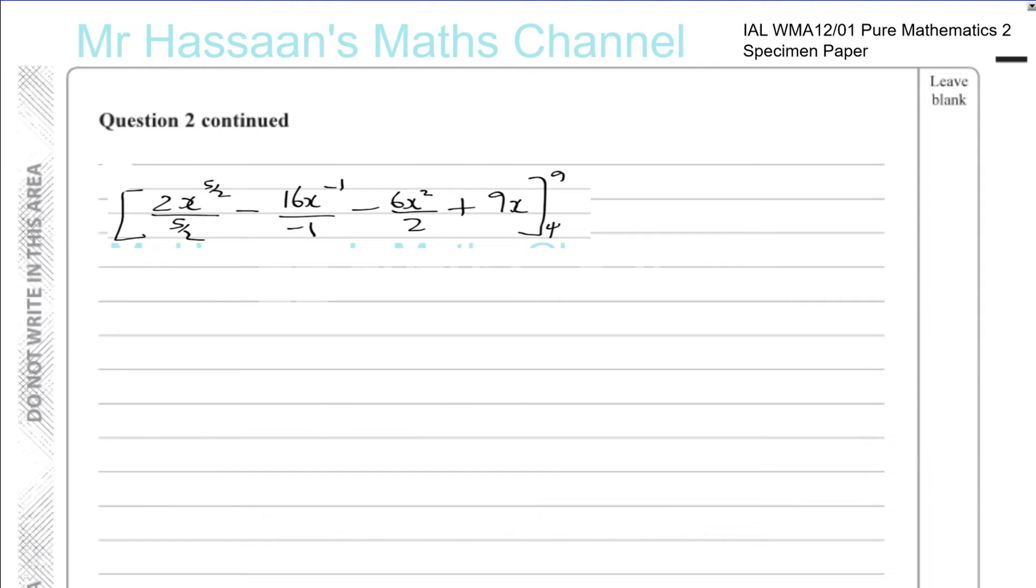So now let's continue with this. Let's just simplify this. So this is like when you divide by 5 over 2 it's like multiplying by 2 over 5.